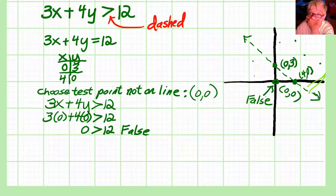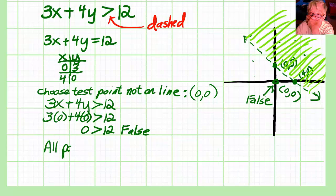So because I have a false, I shade on the other side of our line. There. The graph is finished. All points on the shaded side of the line will give me a true. All points on the unshaded side of the line will give me a false. I always shade the true side.